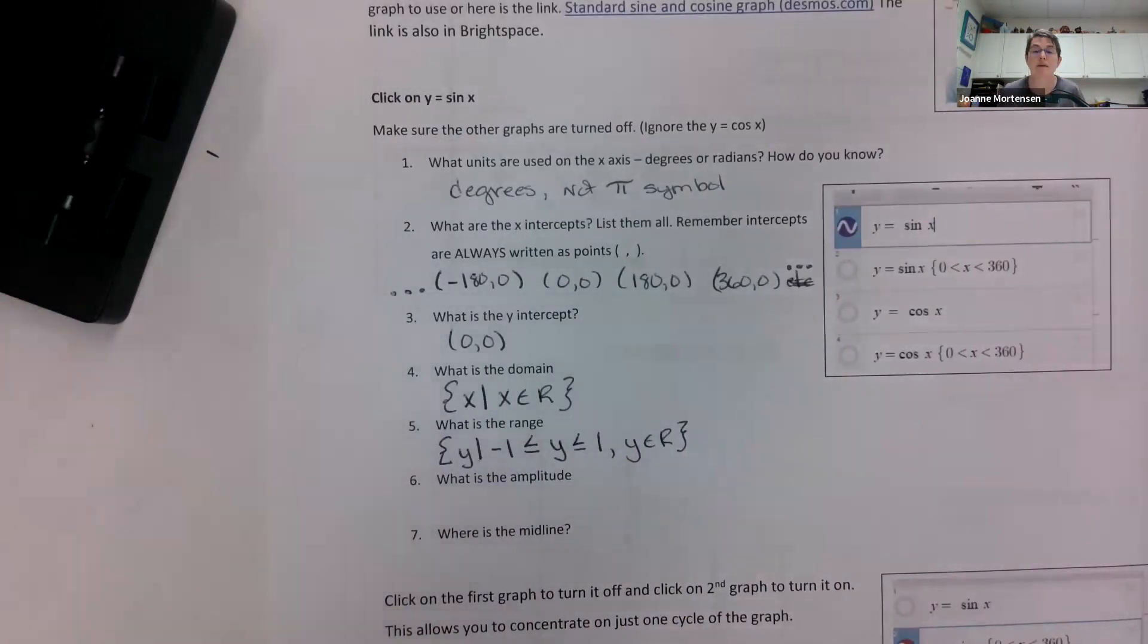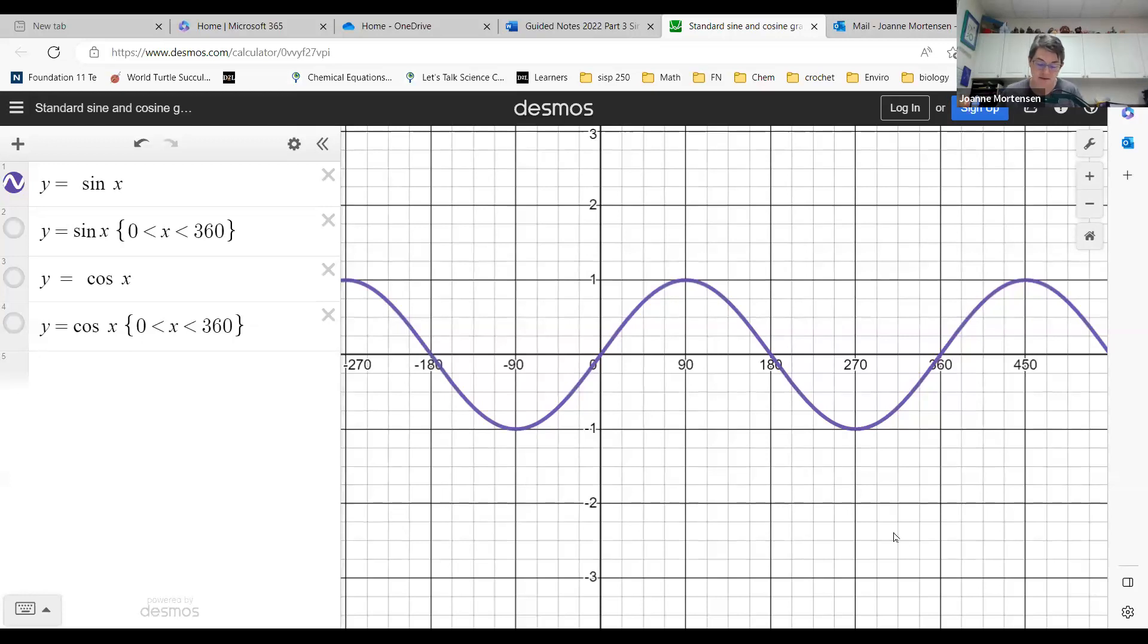All right, okay, back to Desmos because it makes me happy. All right, so amplitude. We talked about that yesterday, well, yesterday because that's what I did the video. From my center to the top, so that's one. And I'm just going to double check from my center down, it's one. So my amplitude is one, and my midline is y = 0.